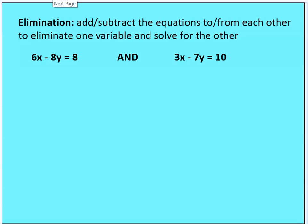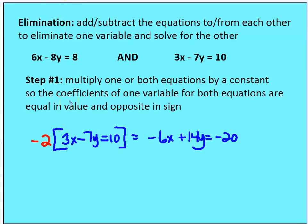I have these two equations for lines, and I want to multiply one or both equations by constants so that the coefficient of one variable is equal in value but opposite in sign for both equations. I see 6x minus 8y equals 8. For the other equation, I'm going to multiply it by negative 2. When I multiply all terms by that constant, I get negative 6x plus 14y equals negative 20. Graphically, it represents the same line.